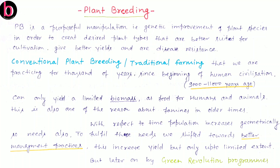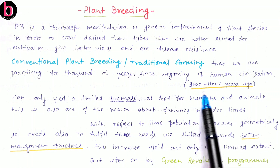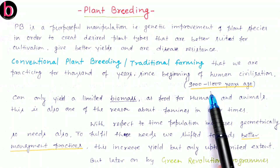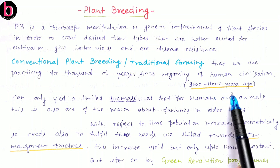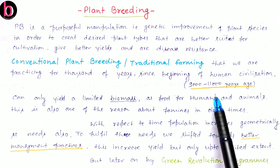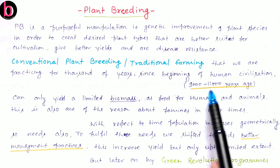In the chapter on evolution it is also given that agriculture came around 10,000 years ago, at the time when human settlement started. So this point is very important: when agriculture started — 9000 to 11000 years according to the plant breeding chapter, and 10,000 years according to evolution. The average of this is also 10,000 years, so you have to focus on this point.